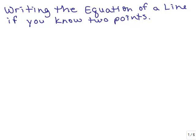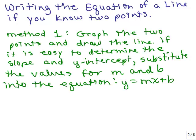There are two methods I'm going to cover. The first method is to simply graph the two points and draw the line. You have to be very careful and accurate if you're going to use this method. And if it's easy to determine the slope by visually looking at your graph and to determine the y-intercept, you can directly substitute the values for m and b into the equation y equals mx plus b.